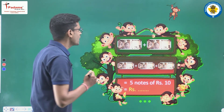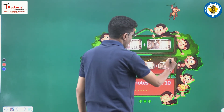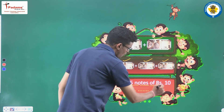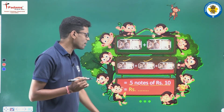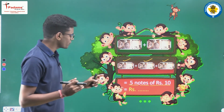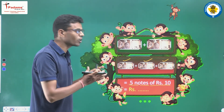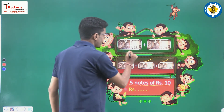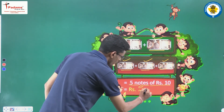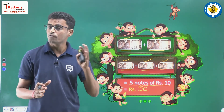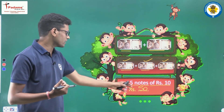Now we jump to the next image. Count the number of notes: one, two, three, four, five — five notes of rupees 10. Now we count the value of the notes: 10 and 10 more is 20, then 30, 40, 50. So we write 50 rupees. It means if we have five notes of 10 rupees, their total value is 50 rupees.